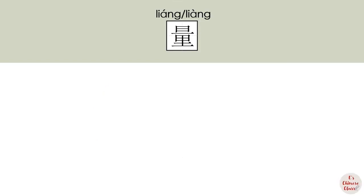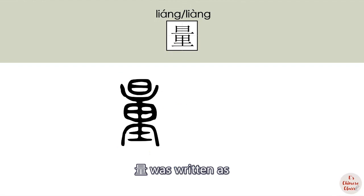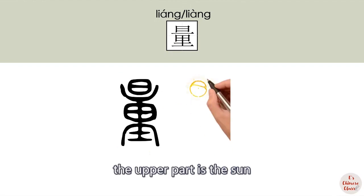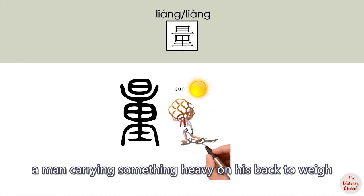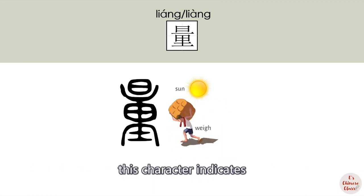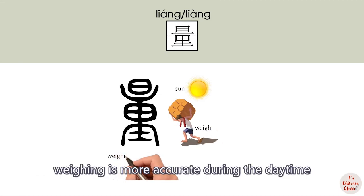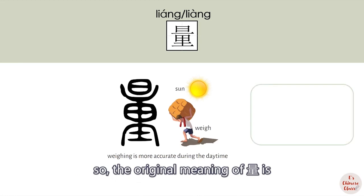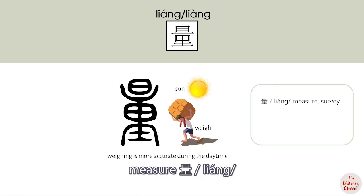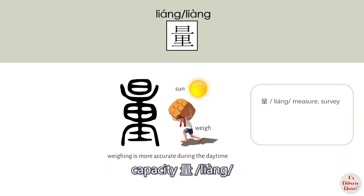In ancient times, 量 was written with the sun as the upper part. The lower part shows a man carrying something heavy on his back to weigh. This character indicates that weighing is more accurate during the daytime, so the original meaning of 量 is 'measure'.